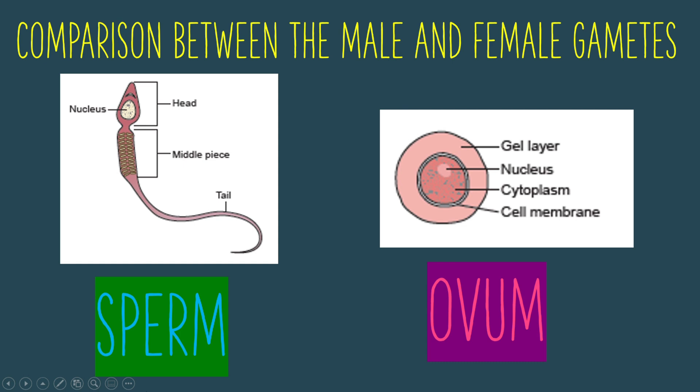The head of the sperm contains the nucleus that carries the genetic information. The middle part of the sperm contains mitochondria, which provide energy for the movement of the tail. The long tail helps the sperm swim towards the ovum.